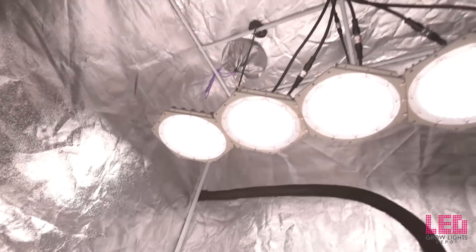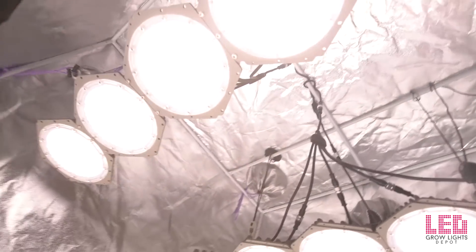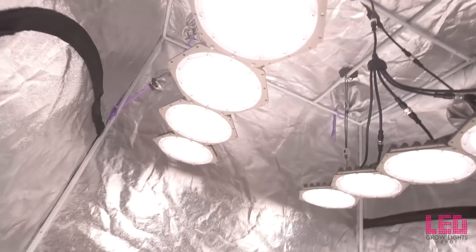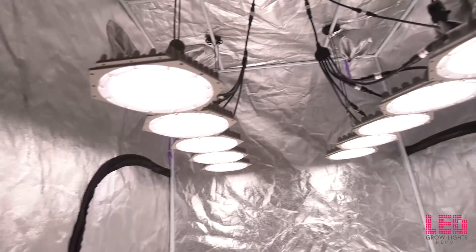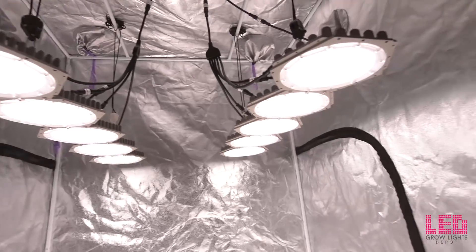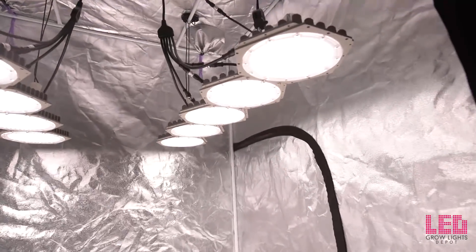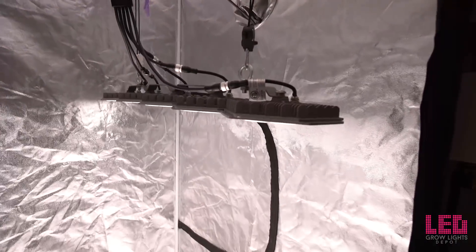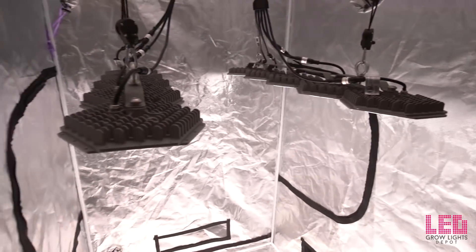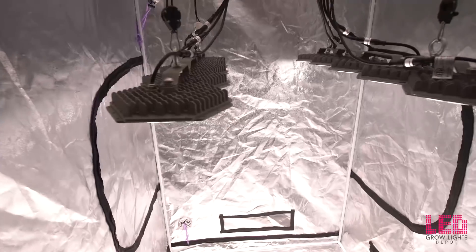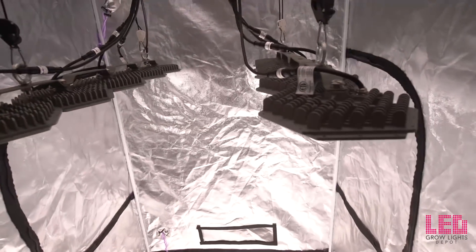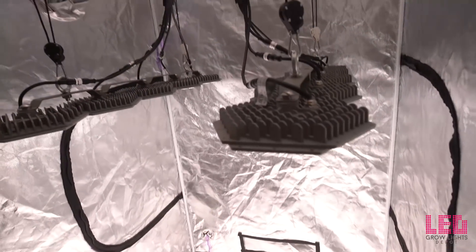The efficacy of the unit is around 2.3 micromoles per joule as stated by the manufacturer. We don't have an integrating sphere to measure this, however assuming this is accurate, this is one of the most efficient grow lights on the market. To cover a 4 by 4 area, the PPF or photon output of the fixture is 1472 micromoles per second. Again, this was estimated by multiplying the wattage by the efficacy.